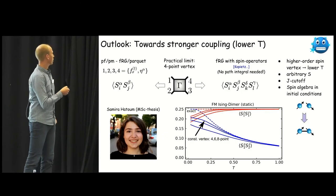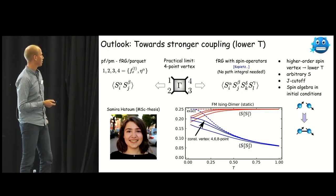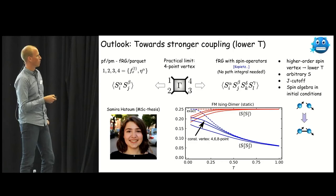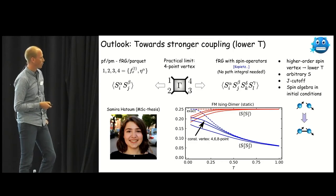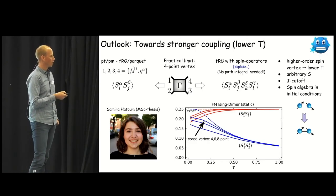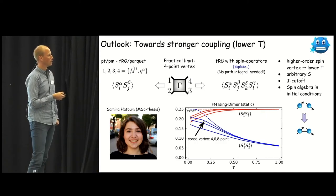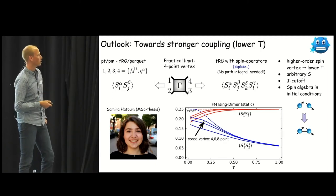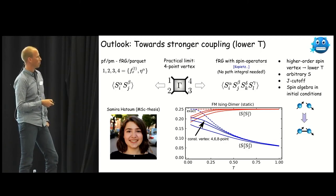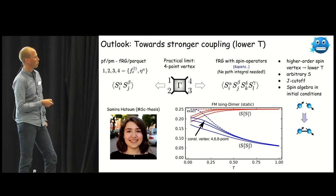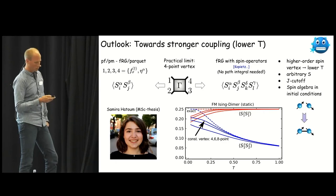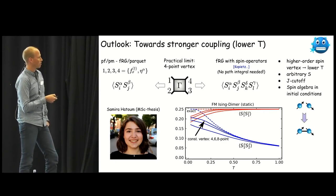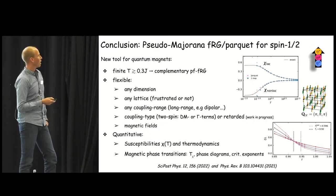This is work that I explore with my master student, Samira Hatoum, and here is some very first fresh from the CPU results on the ridiculously simple ferromagnetic Ising dimer, which is a classical system. We only looked at static properties so far, but there we can see that the method works, and the more vertices we include, the closer we get to the exact results, which are the dashed lines for this correlation function.